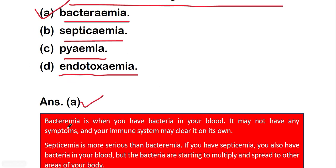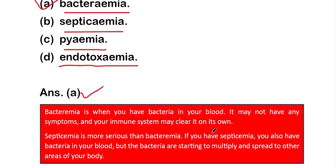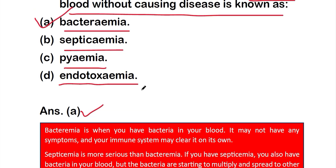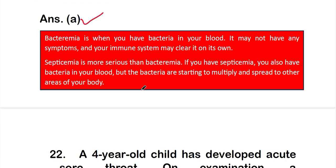Bacteremia is when you have bacteria in your blood. It may not have any symptoms and your immune system may clear it on its own. Septicemia is more serious — if you have septicemia, bacteria are starting to multiply and spread to other areas of your body, causing a more severe reaction.